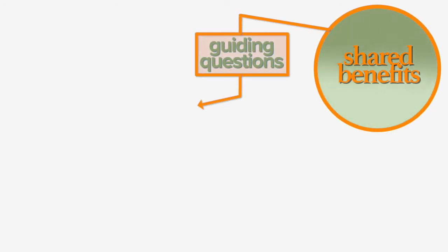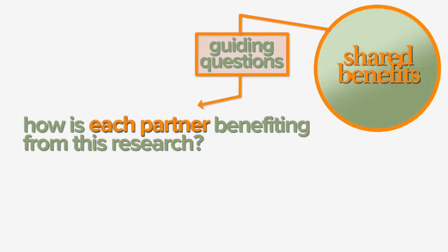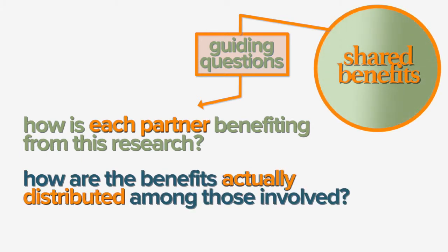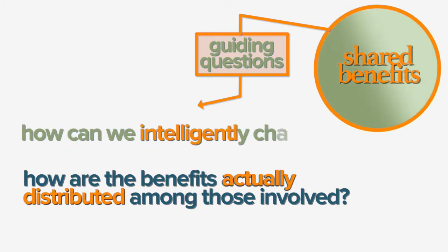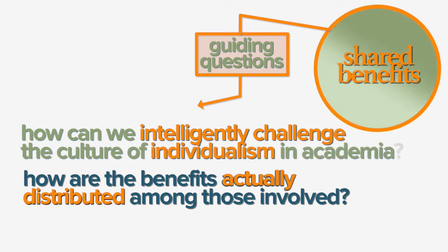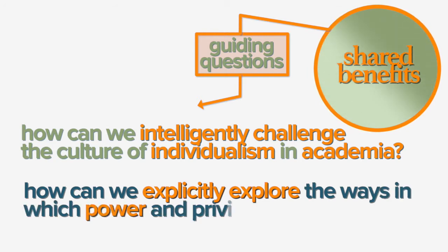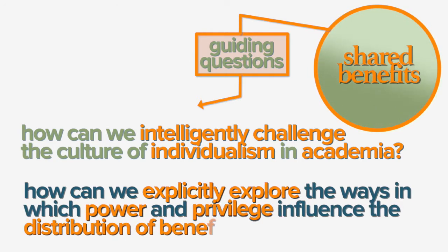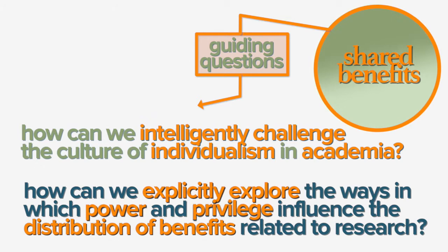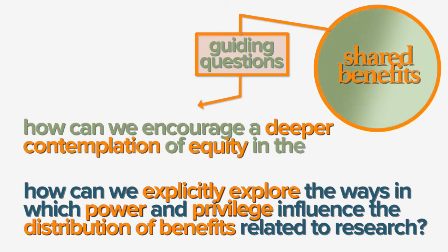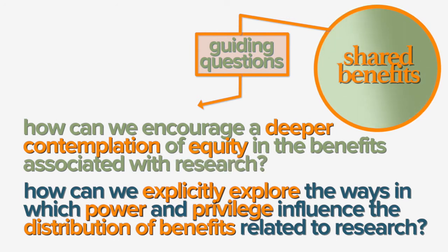Let's stop and reflect on how benefits are shared, asking ourselves: How is each partner benefiting from this research? How are the benefits actually distributed among those involved? How can we intelligently challenge the culture of individualism in academia? How can we explicitly explore the ways in which power and privilege influence the distribution of benefits related to research? And how can we encourage a deeper contemplation of equity — that is, the needs of actors or beneficiaries — in the benefits associated with research?